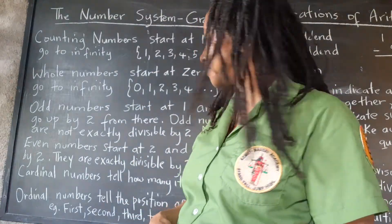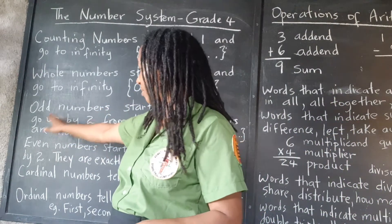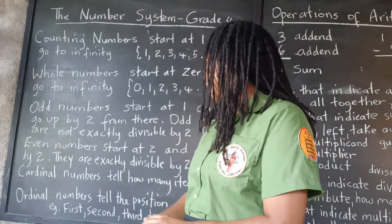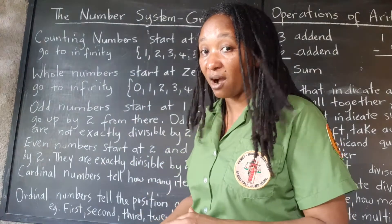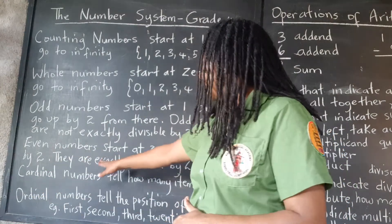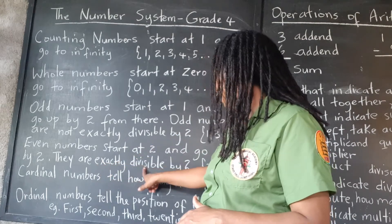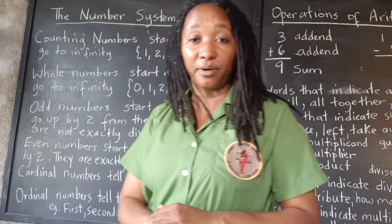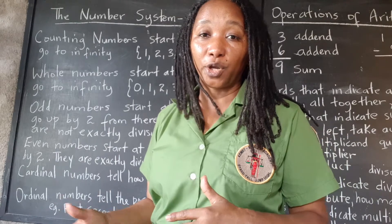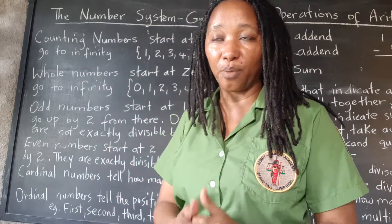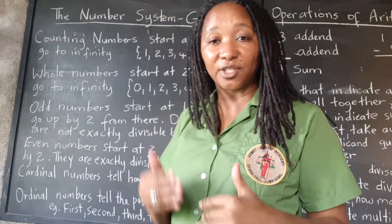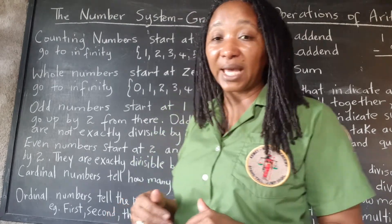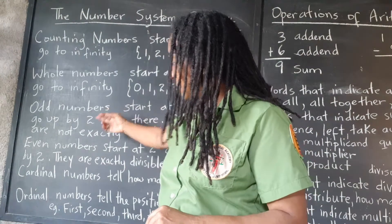The opposite of odd numbers are even numbers. Even numbers start at two and go up by two, just like odd numbers. But the even number is exactly divisible by two. That means when you divide an even number into groups of two, you will always get an exact number of groups with no remainder. That's why we can say even numbers and odd numbers are opposites.